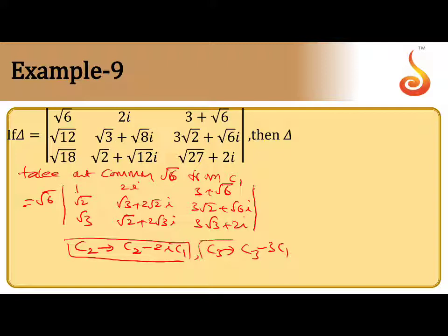If you apply these two operations, then the value of determinant is √6. √6 is already outside and first column will remain the same: 1, √2, √3.